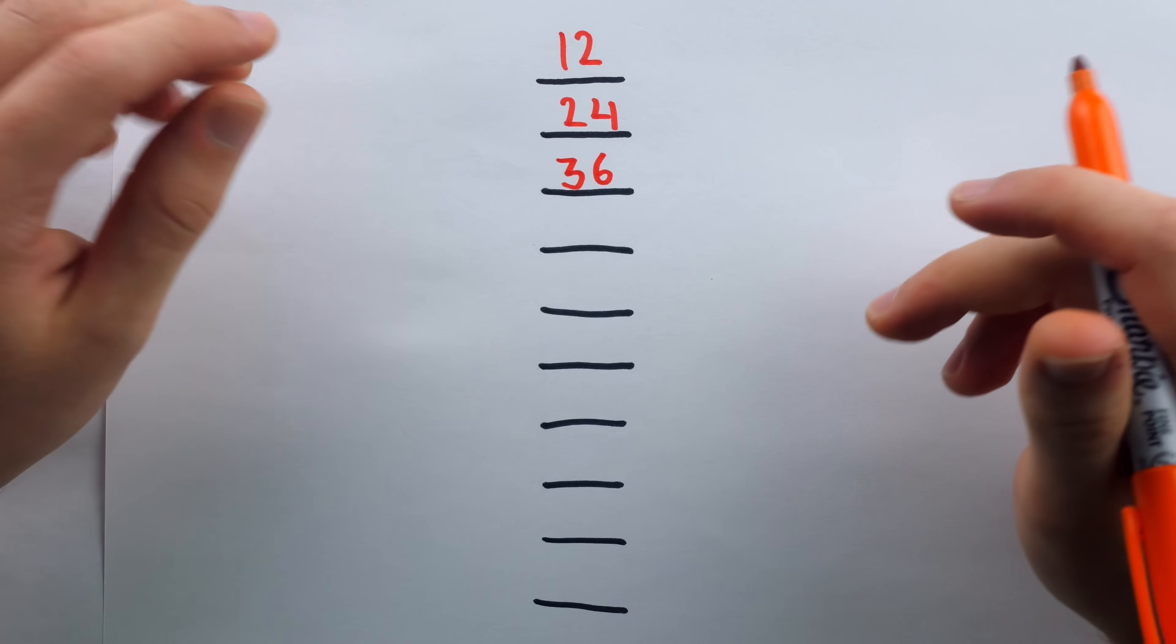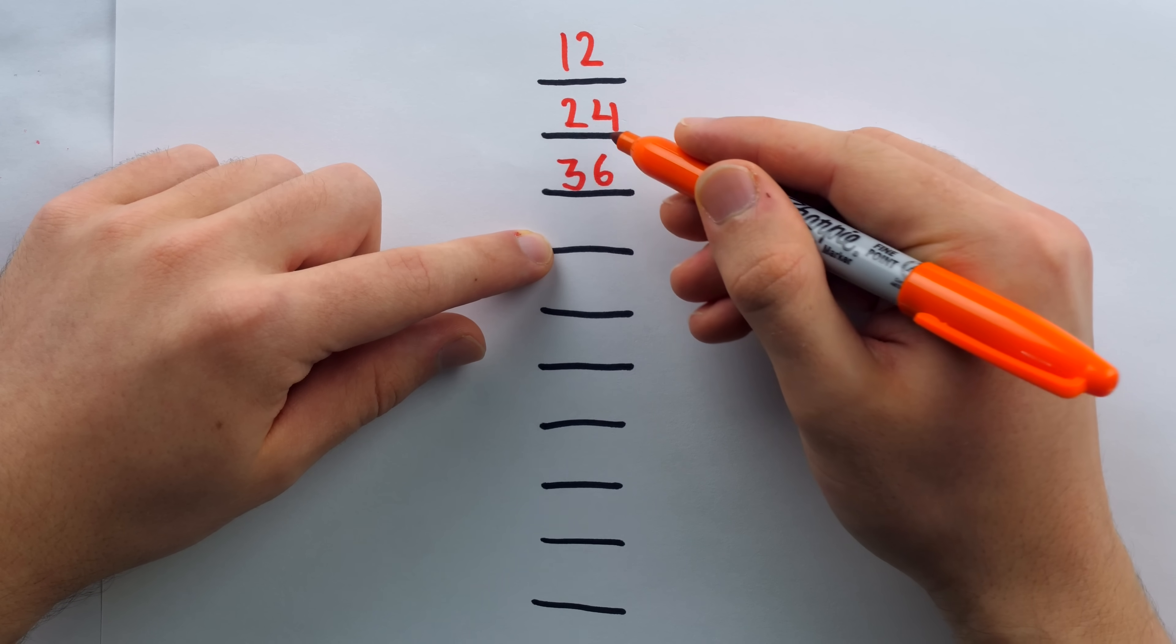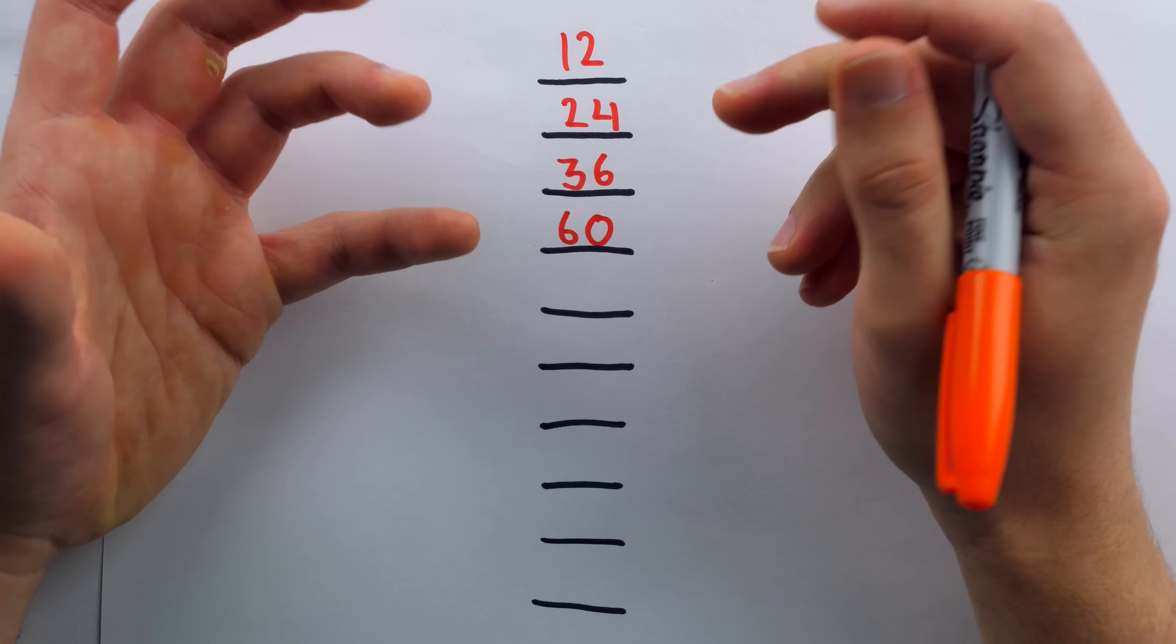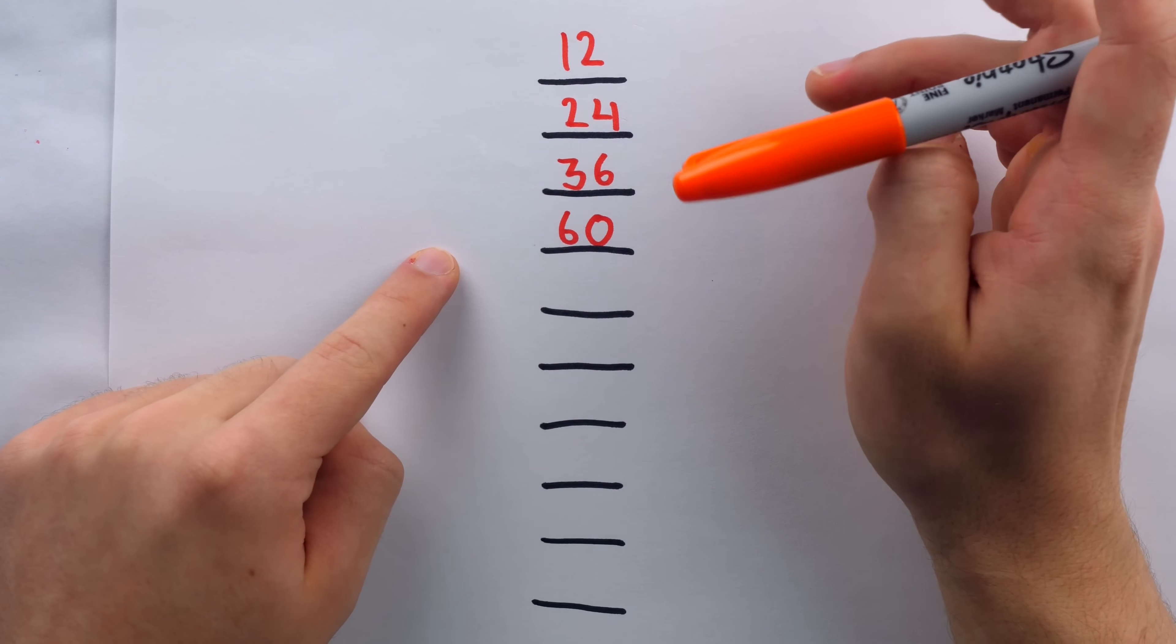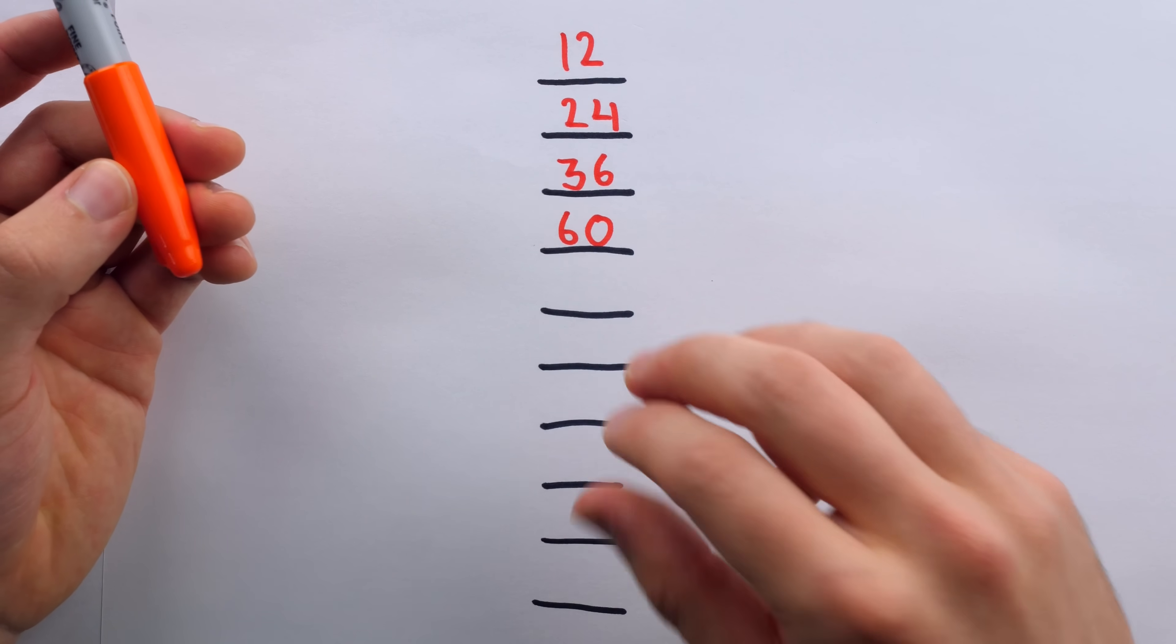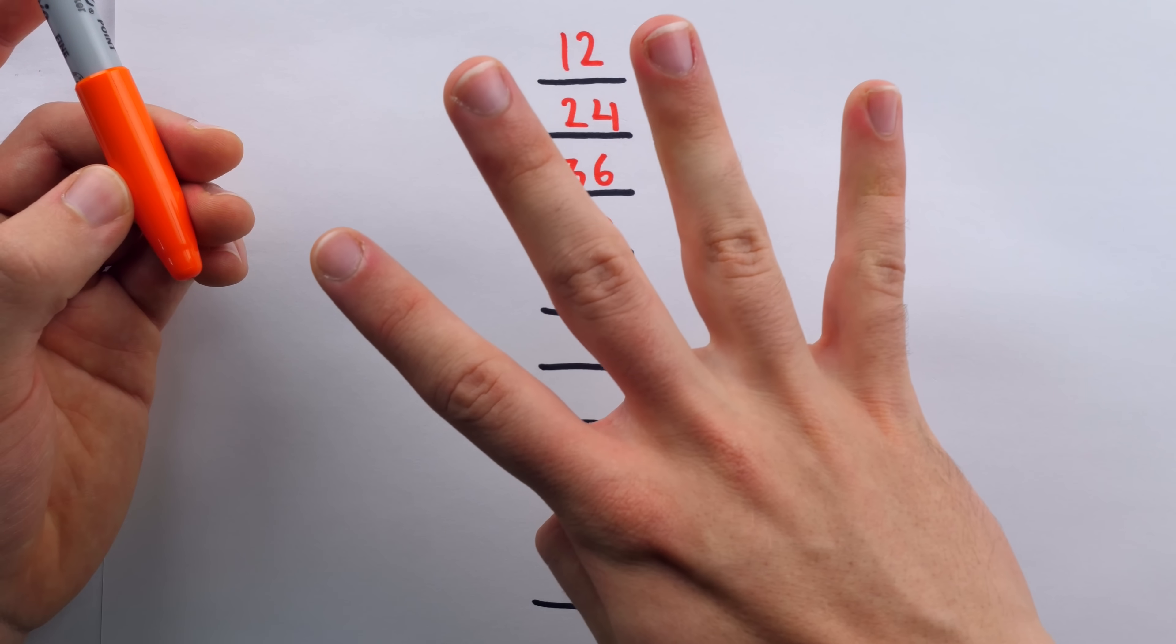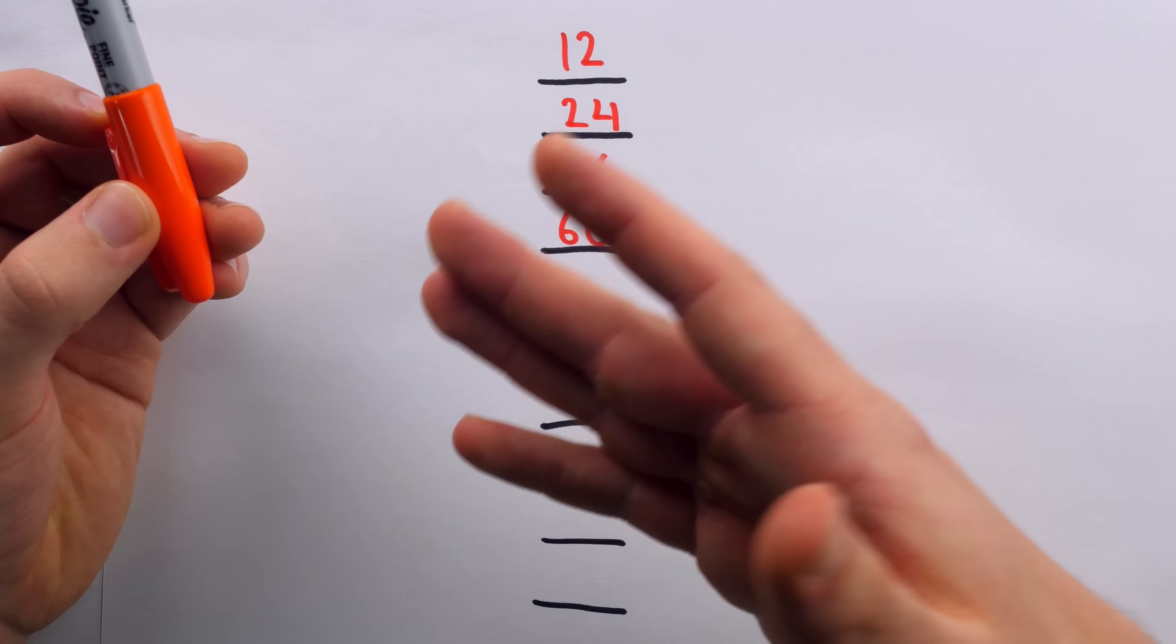For the math folk, this is a sort of Fibonacci-style pattern. This next blank is 36 plus 24. If you're performing this trick for someone or a crowd, I recommend you really want to make sure that the instructions are clear. Each subsequent blank should be the sum of the previous two. Usually I'll give specific examples. I'll say, so the third blank should be the first number plus the second number. The fourth blank should be the second number plus the third number. And so on. Does that make sense? Is that clear?